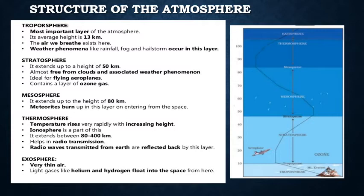First, we are going to learn about what is troposphere. This is the most important layer of the atmosphere. Its average height is 13 km. The air we breathe exists here. Weather phenomena like rainfall, fog, and hailstorm occur in this layer.